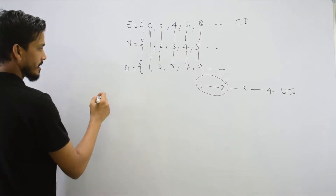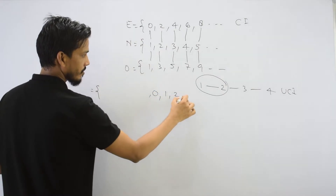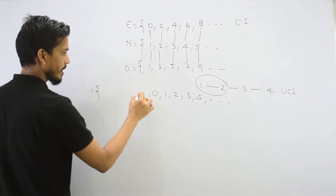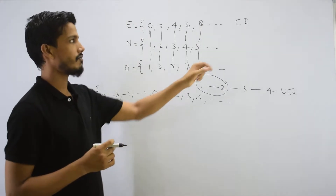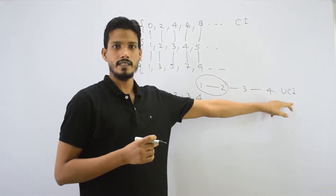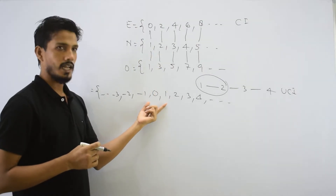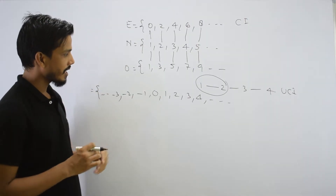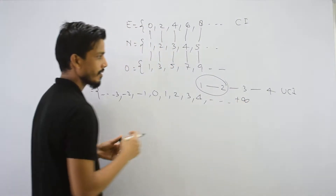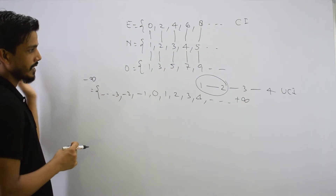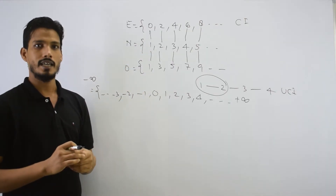Now, if someone says the set of all integers, what does integer mean? Integers means 0, 1, 2, 3, 4 and so on, and also minus 1, minus 2, minus 3 and so on. We need to find out whether this is a countably infinite or uncountably infinite set. When is it countably infinite? When there is a 1-to-1 mapping with natural numbers. But when you look at the integers, where is minus infinity and where is plus infinity? Where will the mapping start? This is the problem.